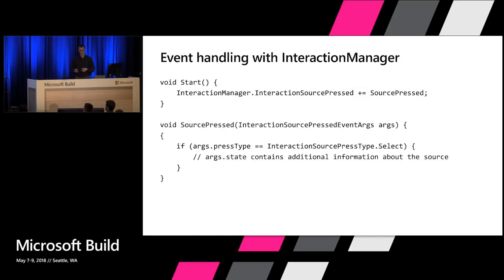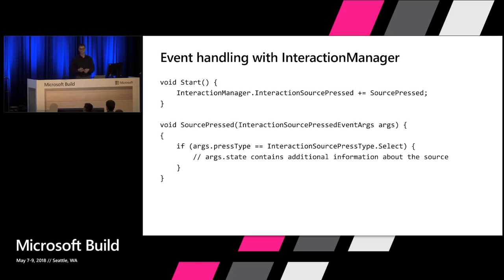There's also an event-driven interface that gives you information about the source and head pose at the time the event occurred — not forward-predicted — which is important for handling user intent. We have event handlers for detected, lost, pressed, released, and updated events. The pressed and released events are always bracketed within a detected and lost event. On the HoloLens, when hands are visible you get a detected event for the hand, and a lost event when the hand is no longer visible.